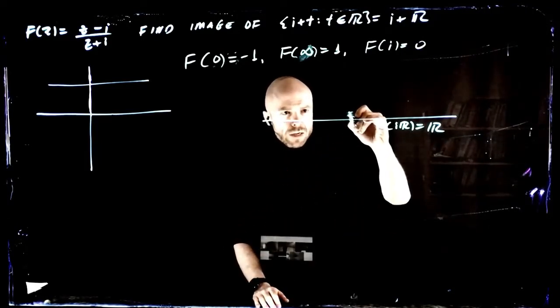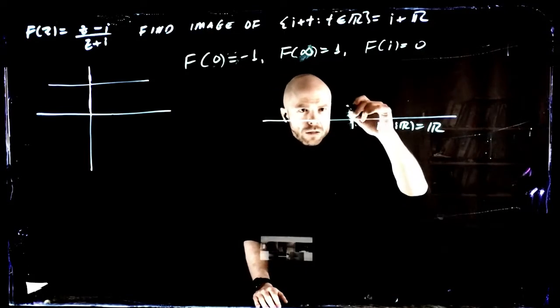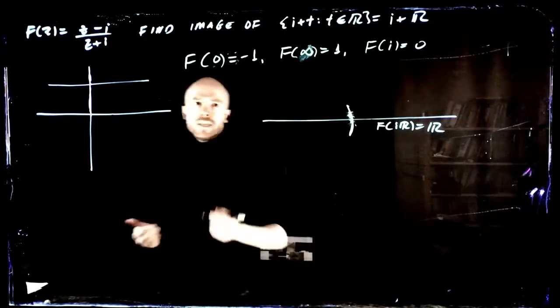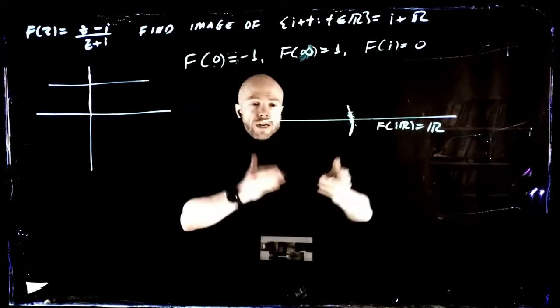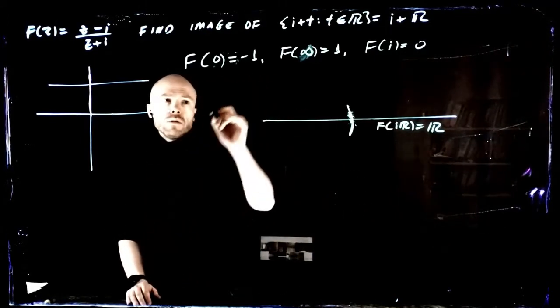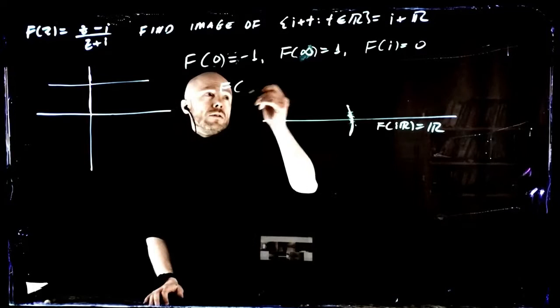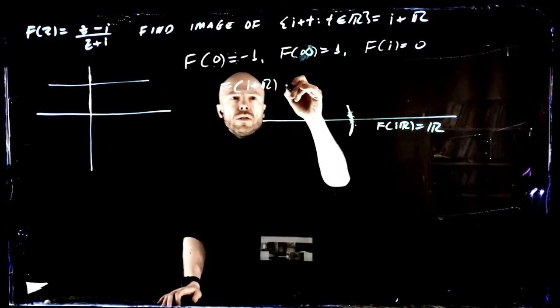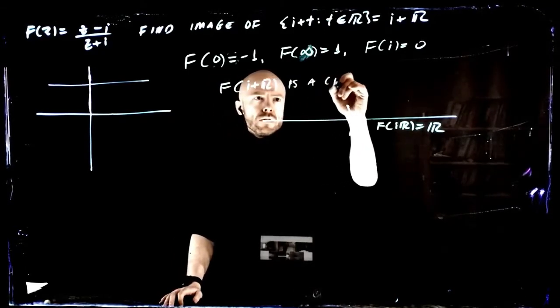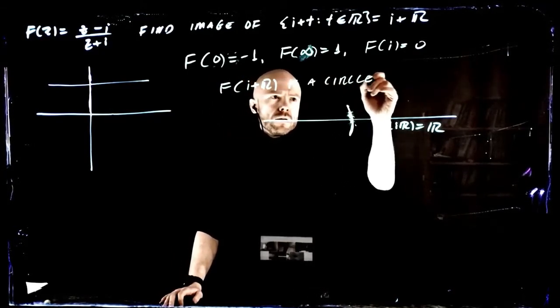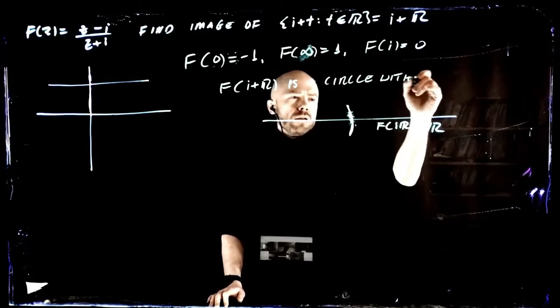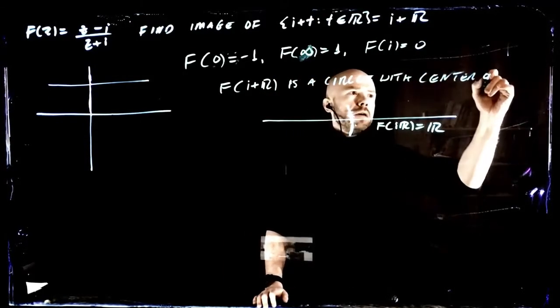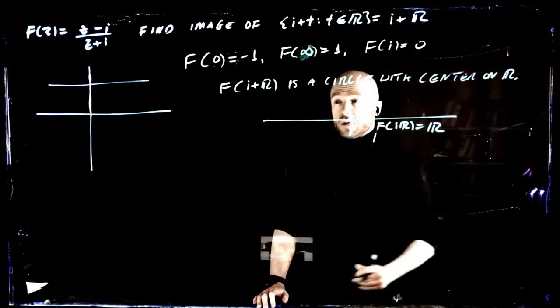The center has to be on the real line, otherwise there'd be an angle. So since it crosses perpendicularly, the center has to be on the real line, so f of i plus r is a circle with center on the real line.